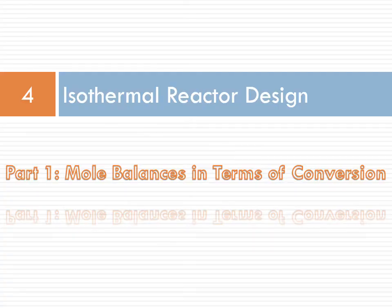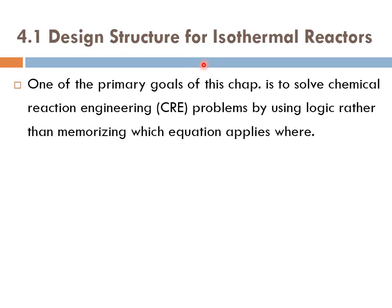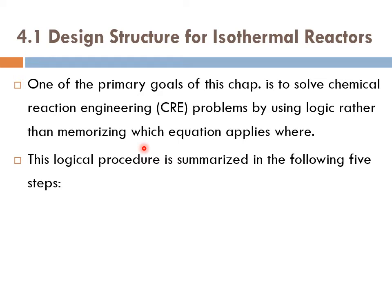Okay, so let's start chapter four, isothermal reactor design. And we're going to start with part one, mole balances in terms of conversion. Design structure for isothermal reactors. One of the primary goals of this chapter is to solve chemical reaction engineering problems by using logic. Again, by using logic, rather than memorizing which equation applies where.